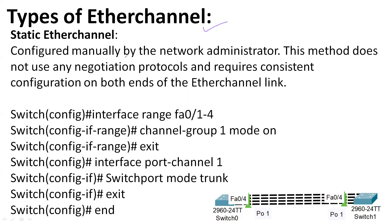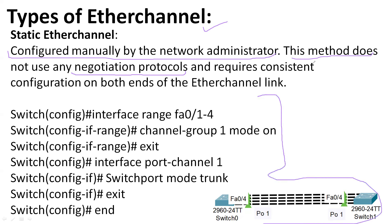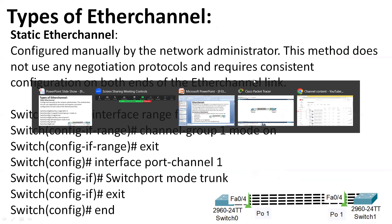There are two types of EtherChannel: static and dynamic. Static EtherChannel is configured manually by the network administrator. This method does not have any dynamic negotiation of protocols. We directly create the EtherChannel using the 'on' mode. For example, I will combine four interfaces to enhance the speed up to 400 Mbps — combining interfaces one to four — and port channel one will be created on both sides.